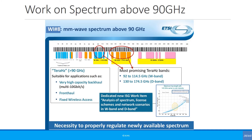This is why in ETSI, work is going on to study bands above 90 GHz. Two bands being studied very thoroughly are the W-band, which goes from 92 to 114.5 GHz, and the D-band, which goes from 130 to 174.5 GHz. These are very high frequencies, and five years ago no one was thinking of using them for any sort of communication. Technology simply wasn't advanced enough, but now, because of Moore's Law and technological advancement, it is possible to study these bands, and in another five years they could be used commercially for backhaul.